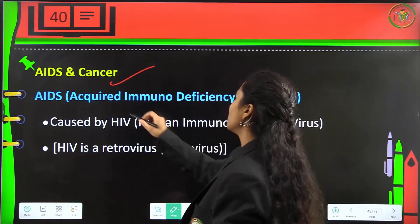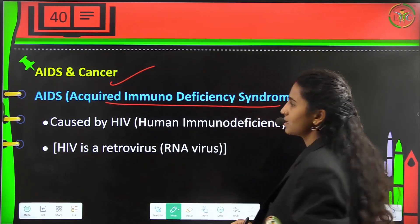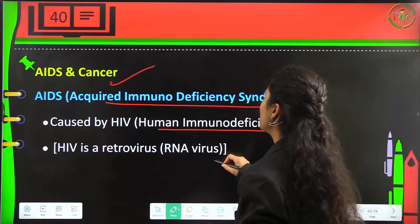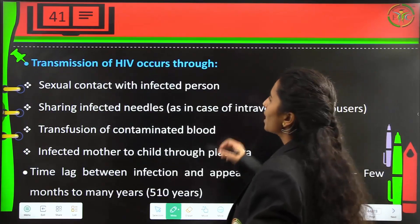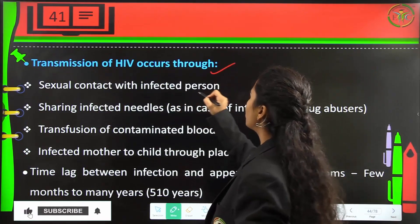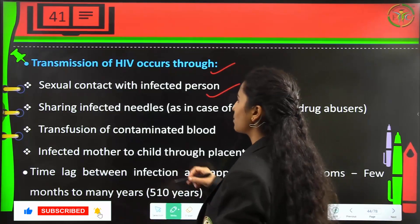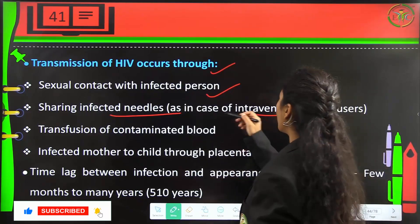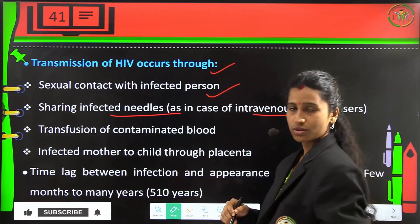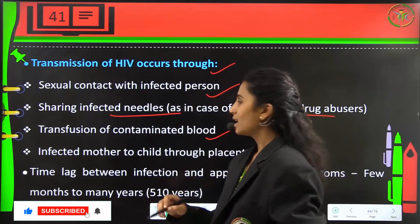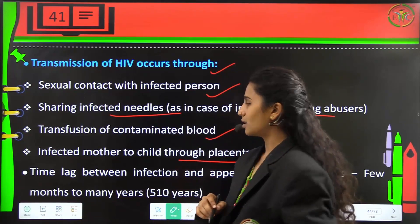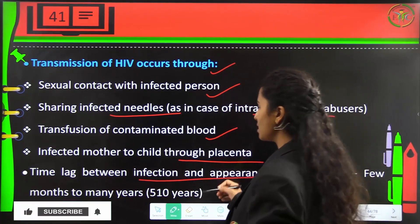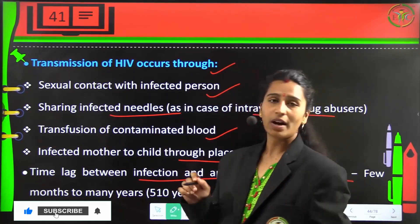The next diseases are AIDS and cancer. AIDS is Acquired Immunodeficiency Syndrome, caused by HIV, which is Human Immunodeficiency Virus — a retrovirus and RNA virus. Transmission occurs by sexual contact with an infected person, sharing infected or unsterilized needles as in intravenous drug abuse, transfusion of contaminated blood, or from an infected mother to child through the placenta. The time lag between infection and appearance of symptoms is a few months to many years, nearly 5–10 years.